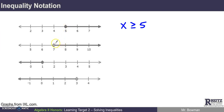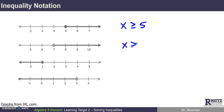Here's another inequality that's similar but different. It suggests we want all numbers greater than a specific number, but the unfilled open dot indicates we don't want to include that value itself, just the numbers after it. So we'd write x is greater than 7 — not greater than or equal to, just strictly greater than 7.